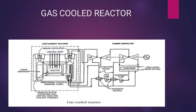This is a schematic diagram of a gas cooled reactor. This is the reactor core. The output of the reactor core is given to the input of the high pressure turbine, which is then coupled to the low pressure turbine. The shaft of both turbines is connected to the generator, and the output of the turbine is given to the input of the condenser.